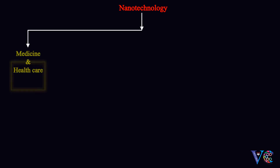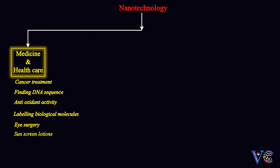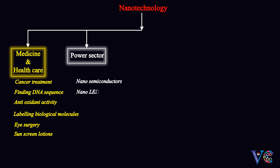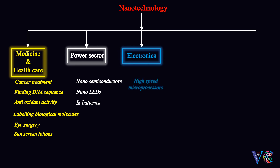Applications of nanotechnology include medicine and healthcare, where nanodevices can destroy cancer cells, nano-gold particles can identify DNA sequences, and buckyballs exhibit antioxidant activity by binding to free radicals. Nanoparticles of titanium oxide offer very good UV protection and are used in sunscreen lotions. In the power sector, nanotechnology improves semiconductor and LED performance, and batteries made with nanomaterials last longer. In electronics, nanomaterials enable high-speed microprocessors and enhanced memory devices.